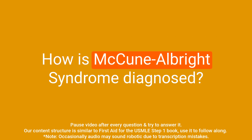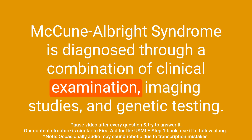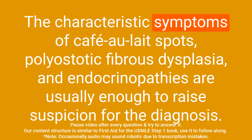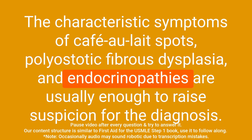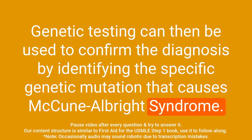Question: How is McCune-Albright syndrome diagnosed? Answer: McCune-Albright syndrome is diagnosed through a combination of clinical examination, imaging studies, and genetic testing. The characteristic symptoms of café-au-lait spots, polyostotic fibrous dysplasia, and endocrinopathies are usually enough to raise suspicion for the diagnosis. Genetic testing can then be used to confirm the diagnosis by identifying the specific genetic mutation.